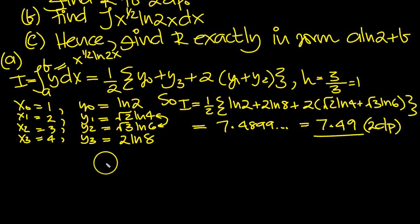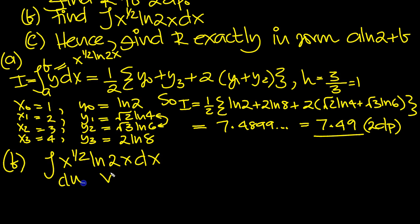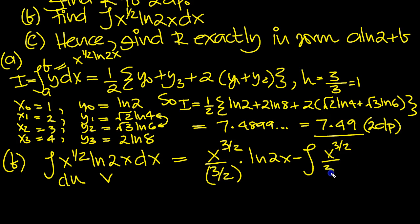Part b then. We need to work out the integral of x to the half ln 2x, which is an integration by parts. We have no choice. That has to be the v. So we've got u, v. So raise the power. There's u times v minus the integral of u times the v. Log of something goes to 1 over something, multiplied by the something differentiated, which is 2 dx. There's our integral then.